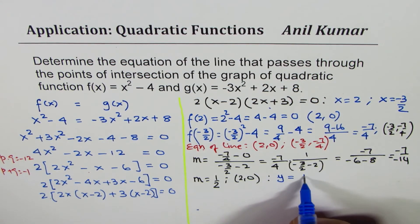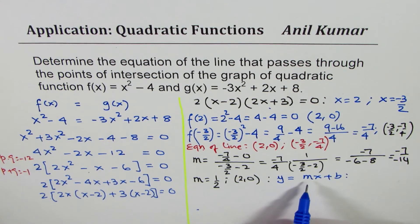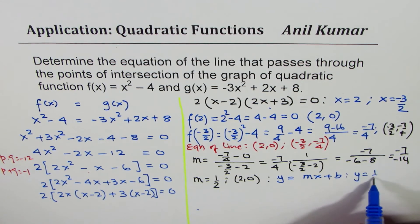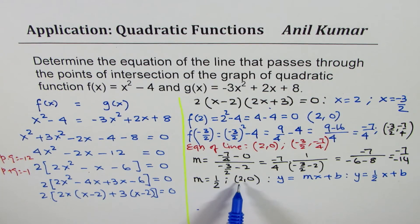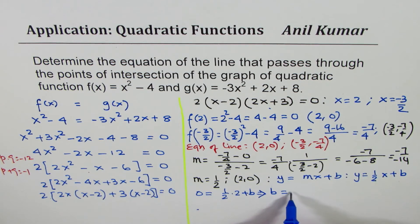We need to find y = mx + b. We know m is 1/2, so we can write this as y = (1/2)x + b. Now if I substitute x = 2 and y = 0, I could solve this as 0 = (1/2)(2) + b. That gives us b = -1.